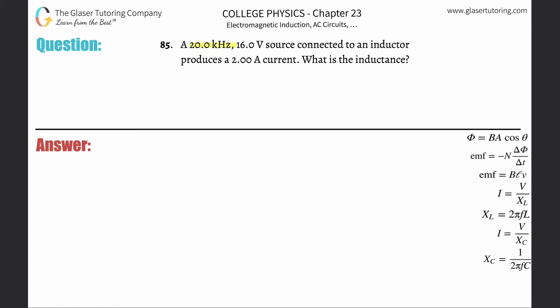Number 85: A 20 kilohertz, 16 volt source connected to an inductor produces 2 amps of current. What is the inductance? We have to figure out how current and voltage are related to inductance.